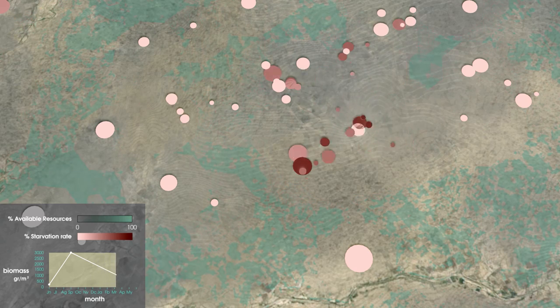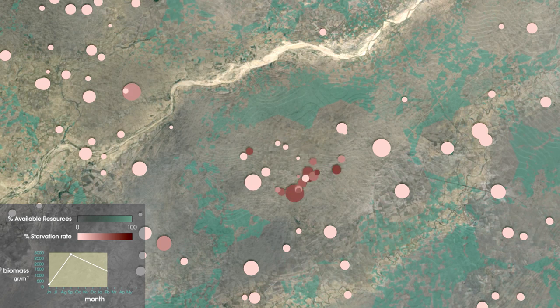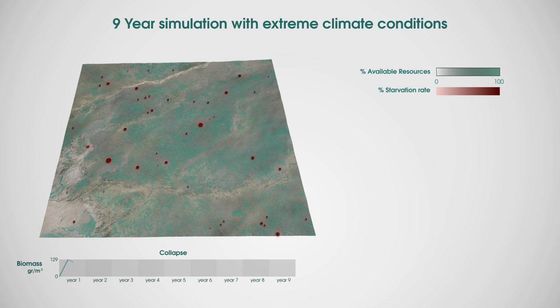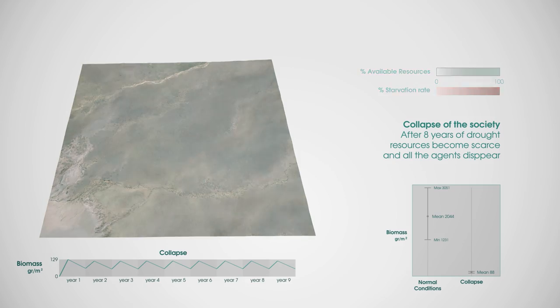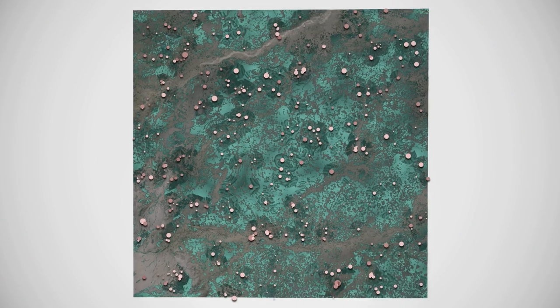We see them grow up, form new families, or search for food in different locations when driven by hunger. The extreme climate reflects in the random succession of droughts and rains that cause abundance or scarcity of food — that is, the success or the collapse of these societies. After several generations, we can extract information about their resilience. But the randomness of the weather and the free will of the agents make each simulation unique. That's why we need to perform thousands of simulations to observe trends and patterns.